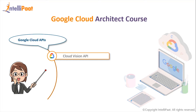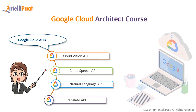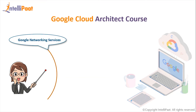Under Google Cloud APIs, you will be taught Cloud Vision API, which can understand the content of an image by categorizing it, detecting individual objects and faces within images, and finding printed words in images. Cloud Speech API can convert audio to text and recognizes over 80 languages and variants. Natural Language API can parse the structure and meaning of text, extracting information including people, places, events, and sentiments from a provided text. Finally, Translate API can translate an arbitrary language string into any supported language, with language identification available when the source language is unknown.